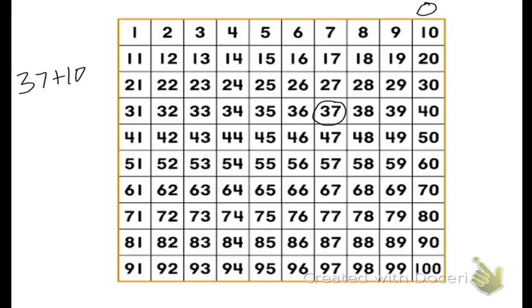Well, I could start at 37 and count up 10. So 37, 38, 39, 40, 41, 42, 43, 44, 45, 46, 47, and I end up with 47. Where was that number located? Ah, it was just below 37. So 37 plus 10 equals 47.